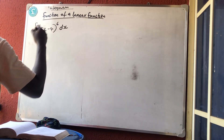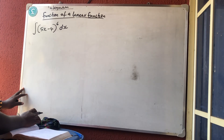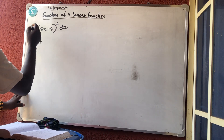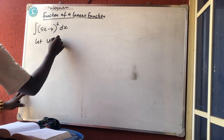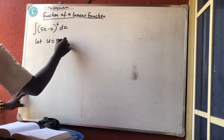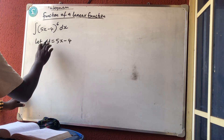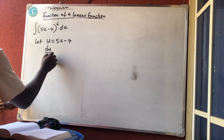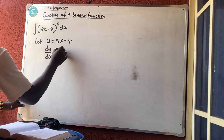I will show you both the shortcut and the normal method. For the normal method, we use substitution as we did in differentiation. Let u be 5x − 4. Therefore, du/dx is equal to 5.